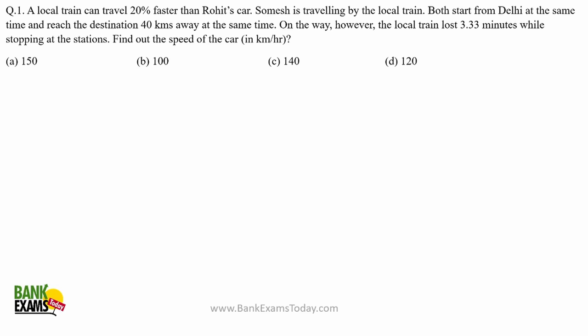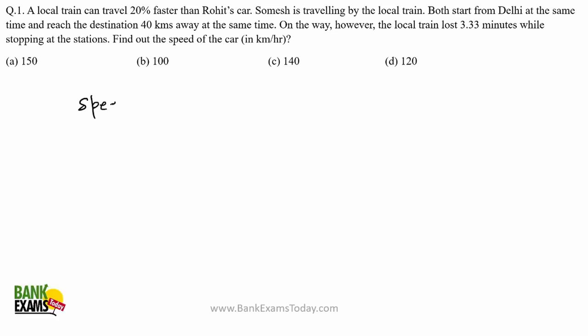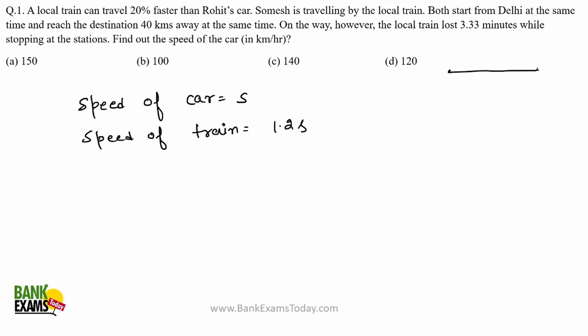A local train can travel 20% faster than Rohit's car. Sommesh is traveling by that local train. Let's say the speed of the car is S kilometers per hour. According to the statement, speed of the train should be 20% more than that — or 1.2 times S. Both the train and the car start from Delhi at the same time and reach the destination 40 kilometers away at the same time. The distance to be covered for both train and car is 40 kilometers — the same for both.